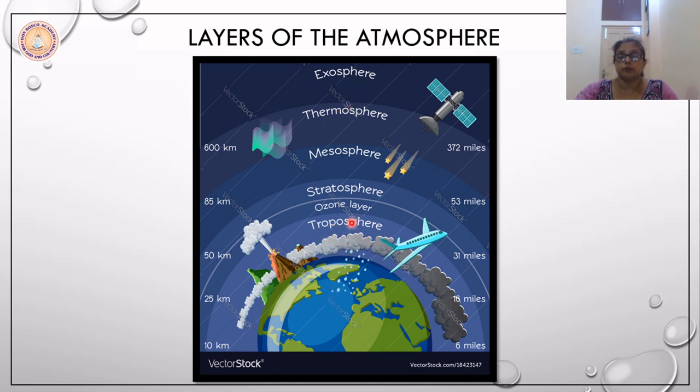Most of the atmosphere's consistency is found very close to the earth and it is mainly because of two reasons. Firstly, because of the gravitational pull of the earth. So nearly 90% of the atmosphere's density is very close to the earth.